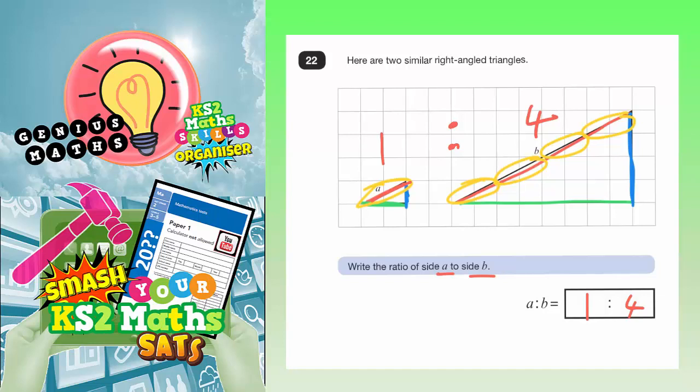Another way of doing it is to look at the two blue lines. So this is one square and this is four squares. And again, every time there's one square on the smaller shape, there are four squares on the largest shape. It's four times bigger. So again, that supports that it's one to four.